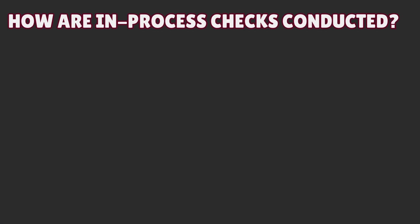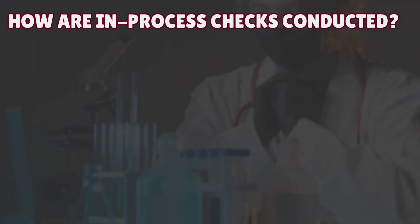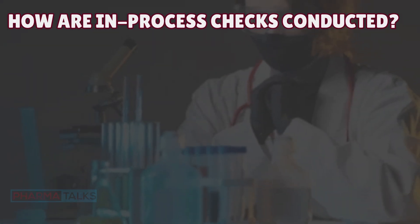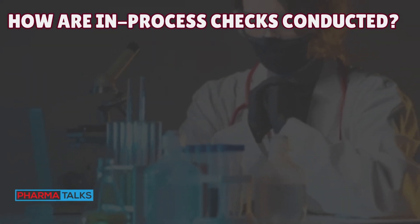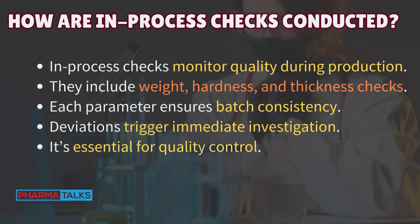Managing quality in pharmaceutical production: How are in-process checks conducted? In-process checks monitor quality during production. They include weight, hardness, and thickness checks. Each parameter ensures batch consistency. Deviations trigger immediate investigation. It's essential for quality control.